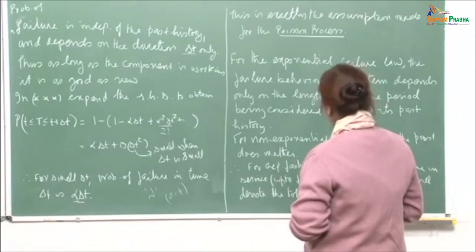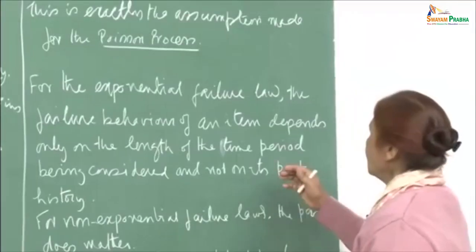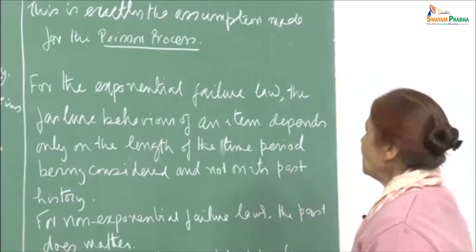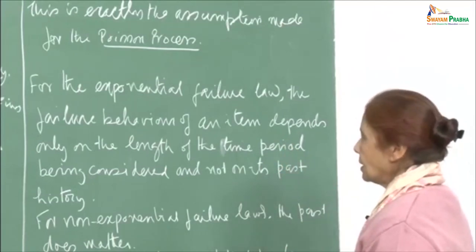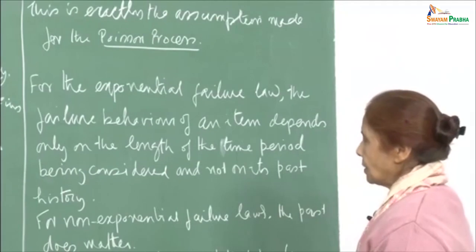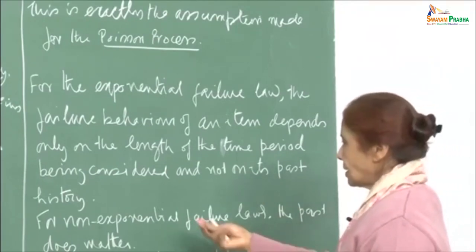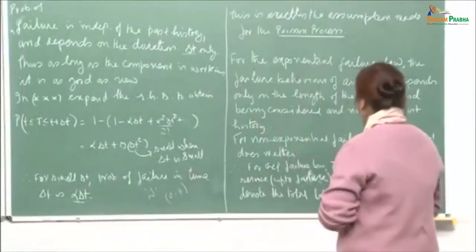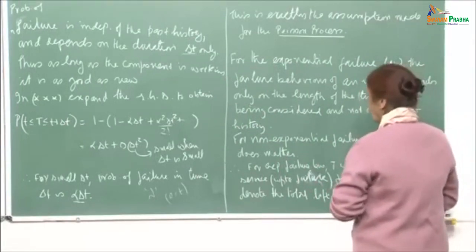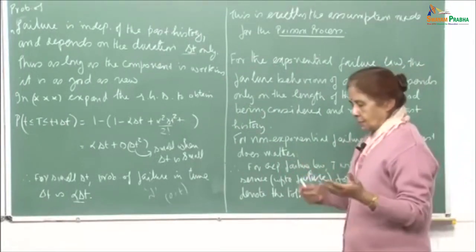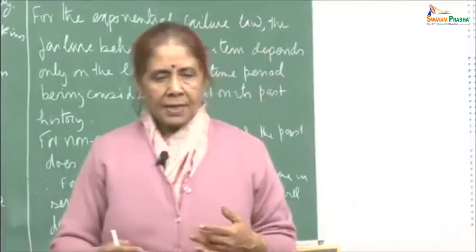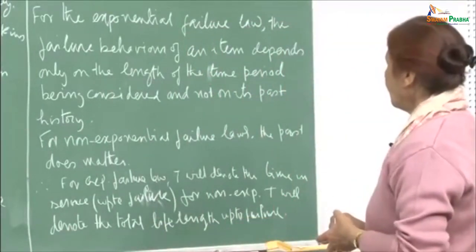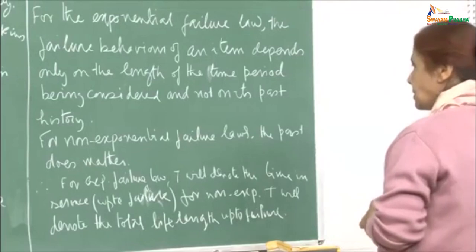For the exponential failure law, the failure behavior of an item depends only on the length of the time period being considered and not on its past history. For non-exponential failure laws, the past does matter — because when a component is under stress, the wearing-out effect is there, and it depends on how long the stress has been applied.